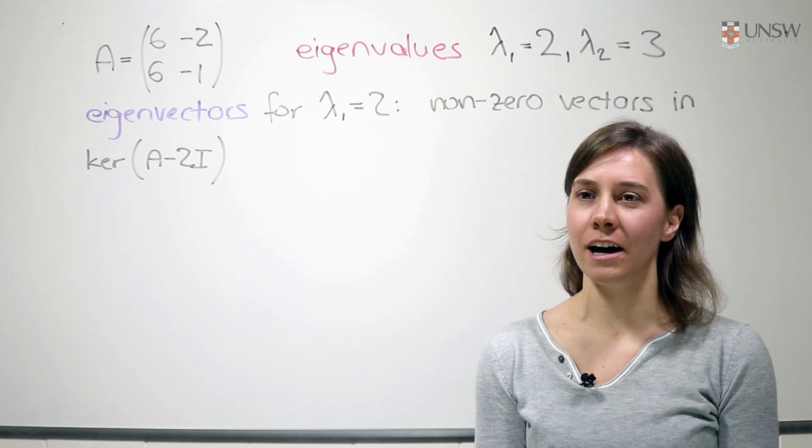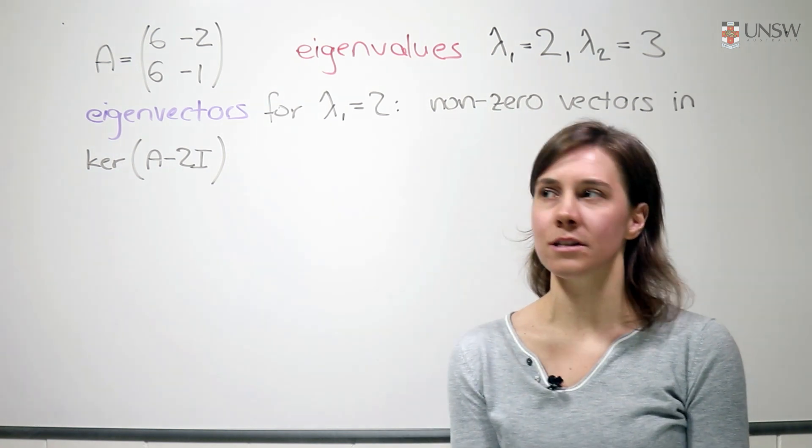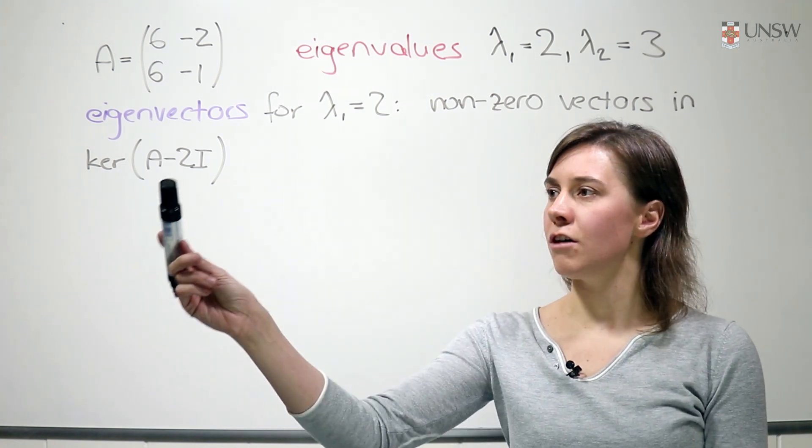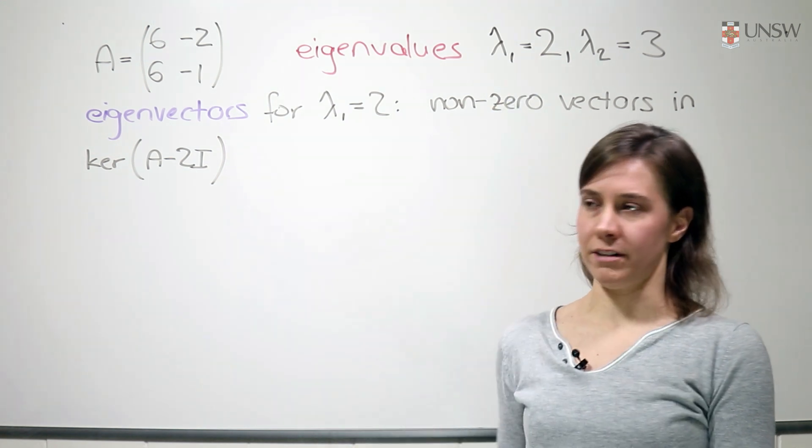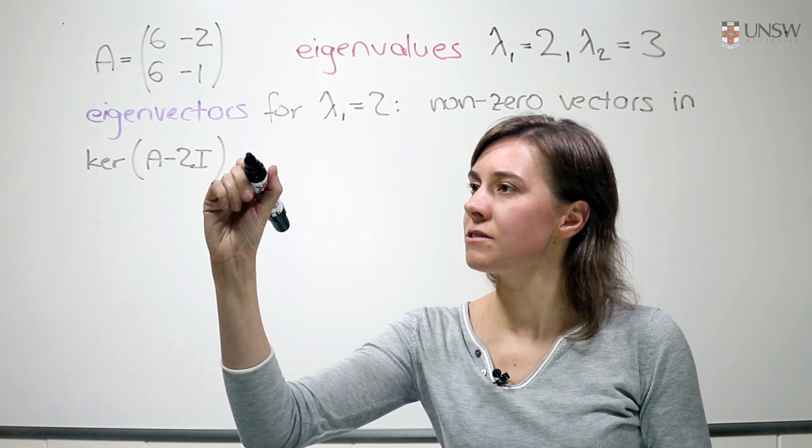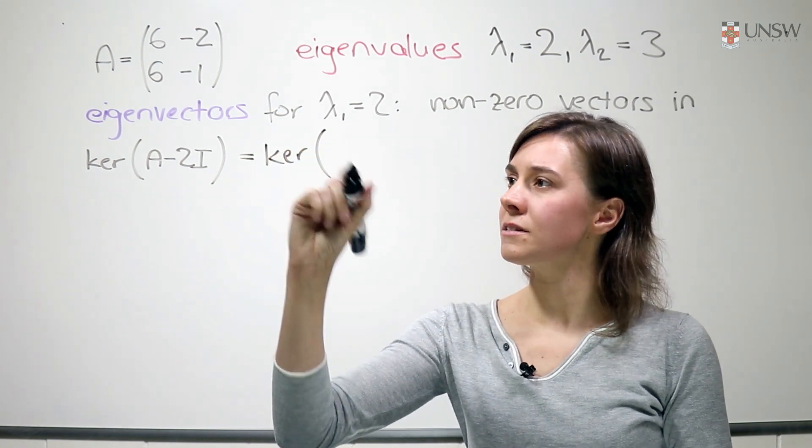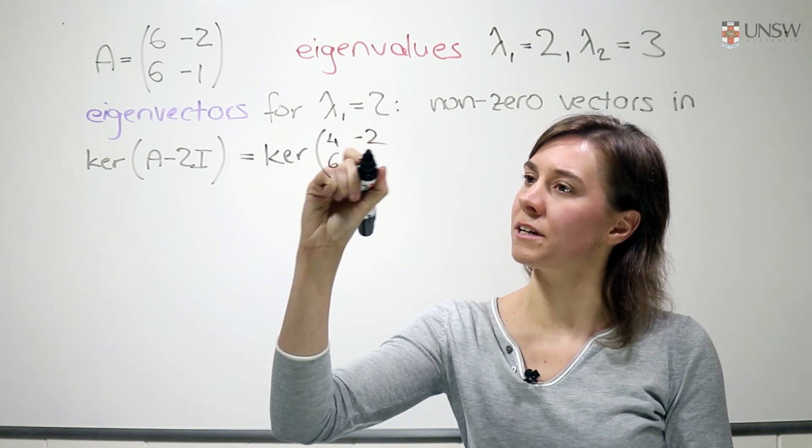So now let's compute the eigenvectors for the eigenvalue lambda 1 equal to 2. We have to find all the non-zero vectors in the kernel of A minus 2 times the identity matrix, where 2 here is the eigenvalue. So this is the kernel of the matrix 4 minus 2, 6 and minus 3.